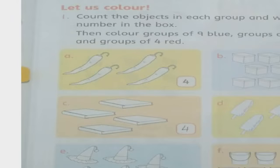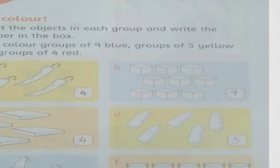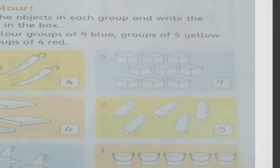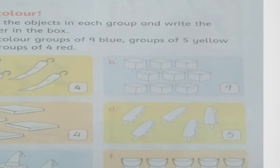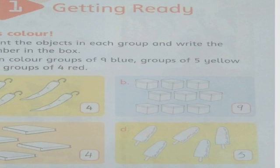Now move to part B. First of all we count: one, two, three, four, five, six, seven, eight, and nine. That gives us nine. And what color do we use in these boxes? Blue.